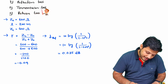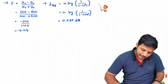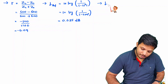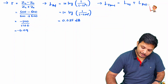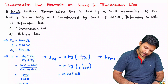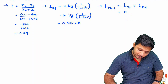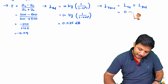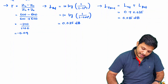For transmission loss, as explained in the previous video on transmission line losses, transmission loss = attenuation loss + reflection loss. Since the transmission line is lossless, attenuation loss = 0. Therefore, transmission loss = 0 + 0.035 = 0.035 dB.